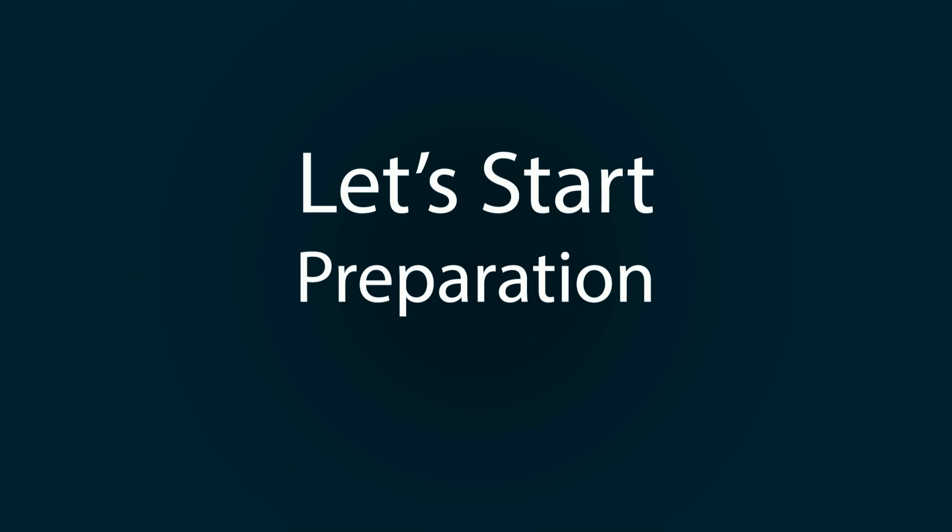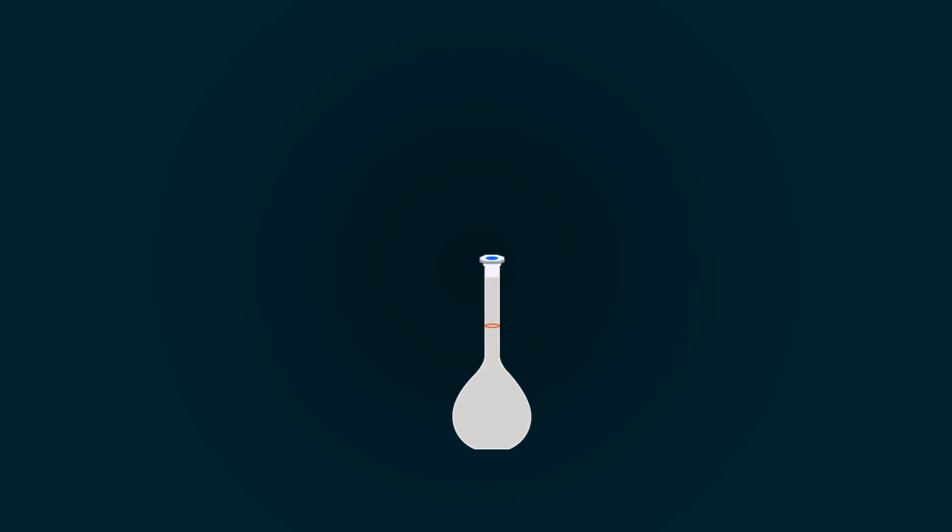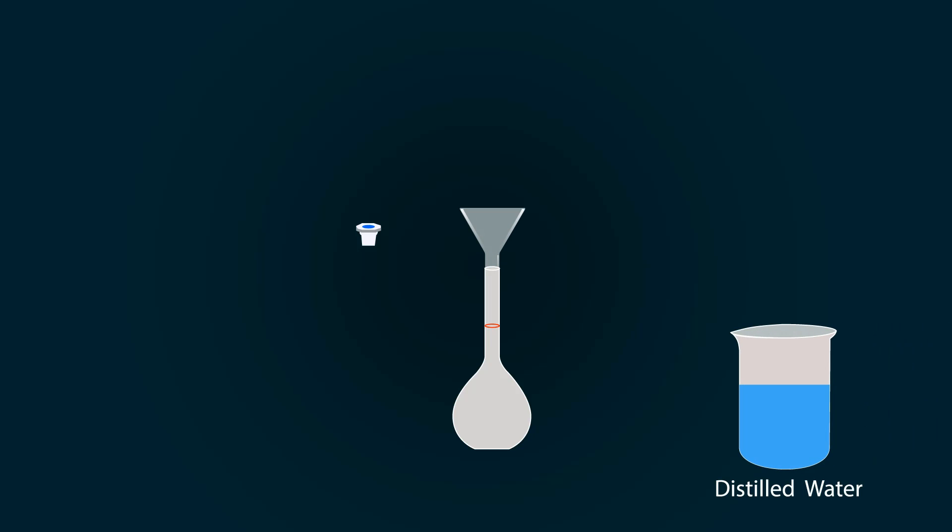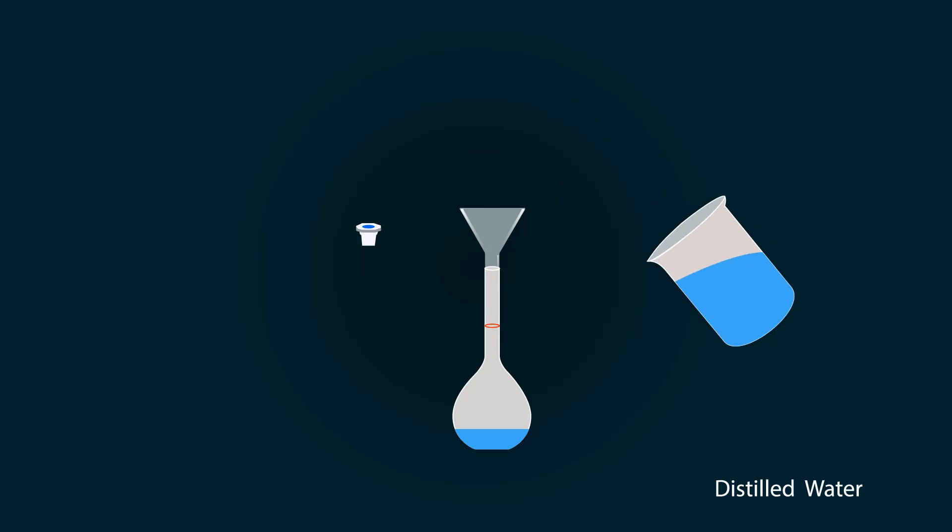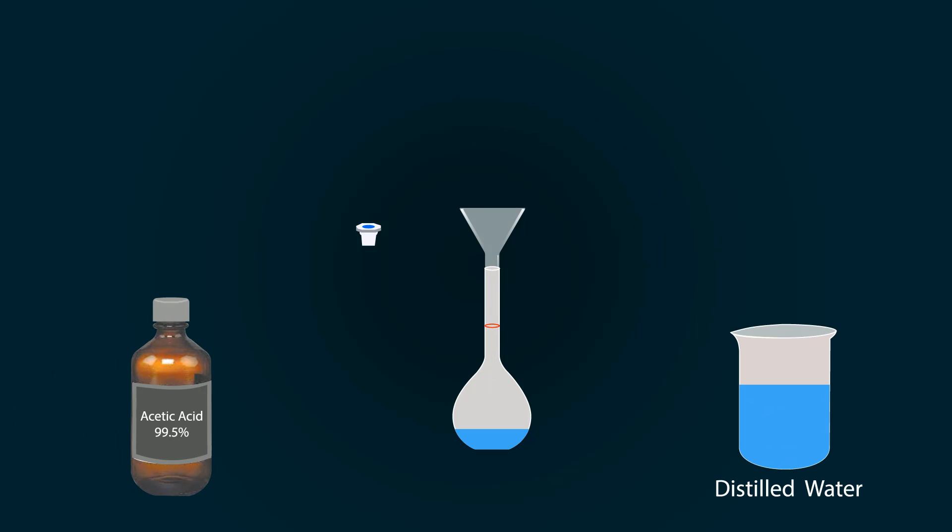Let's start preparation. First, take the volumetric flask and put the funnel on top. Now add some distilled water into the volumetric flask. Do not add acetic acid directly into the flask because the flask may burst.